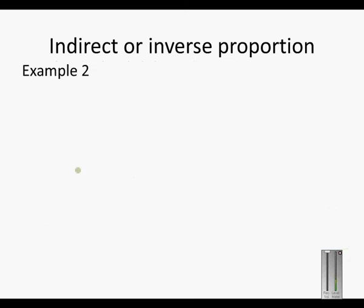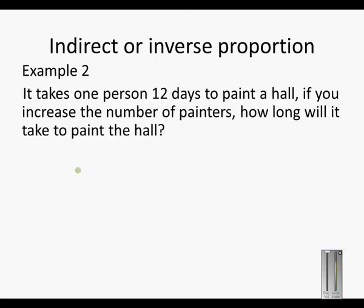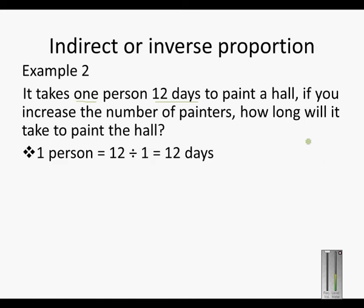Another example. It takes one person 12 days to paint a hall. If you increase the number of painters, how long will it take to paint the hall? So one person takes 12 days — 12 divided by 1 is 12.